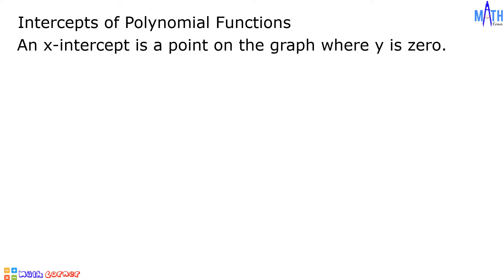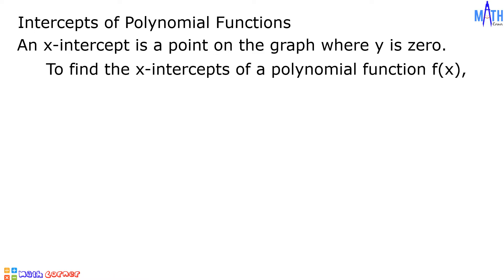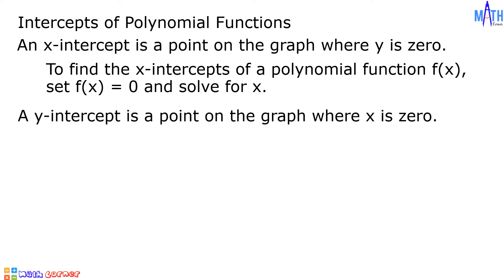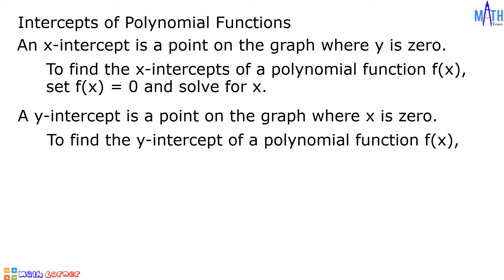An x-intercept is a point on the graph where y is 0. To find the x-intercepts of a polynomial function f of x, set f of x equal to 0 and solve for x. A y-intercept is a point on the graph where x is 0. To find the y-intercept, set x equal to 0 and solve for f of x.